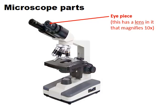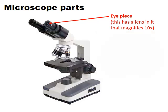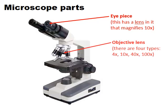Each eyepiece has a lens of ten times magnification within it. You'll also see down at the eyepiece a small scale called the eyepiece graticule, which we're going to use later to measure the actual width of different structures viewed down the microscope. There are four other objective lenses we could use.